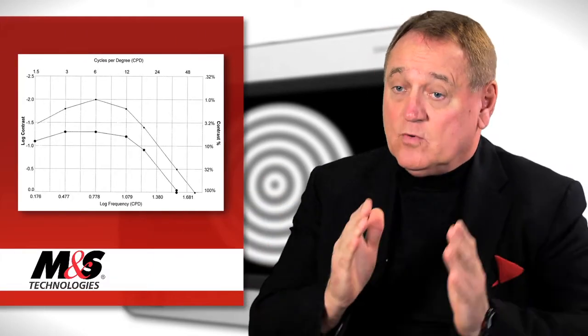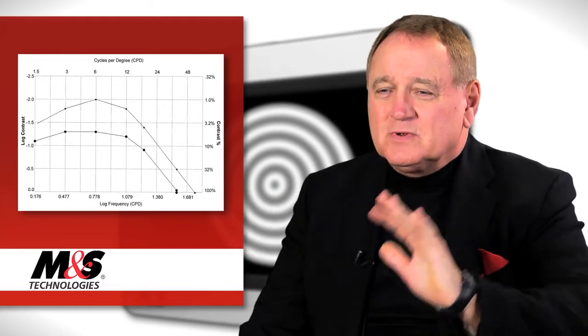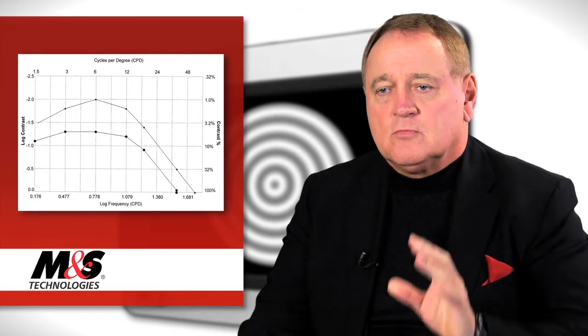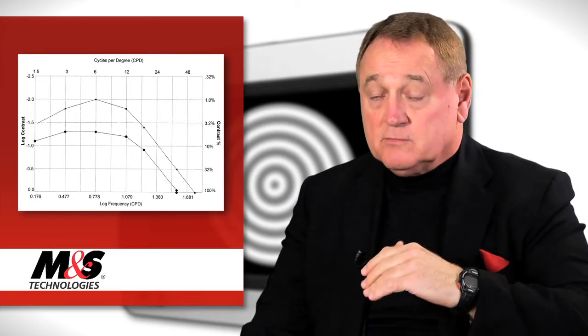In addition to that, we've calibrated the system with very good studies from different investigators that show us exactly what the performance should be at each of a half, one, one and a half, three, six, nine, and eighteen cycles. It turns out that the three and six cycle levels are the most important to people in terms of really quickly measuring the performance of the eye in terms of contrast sensitivity.